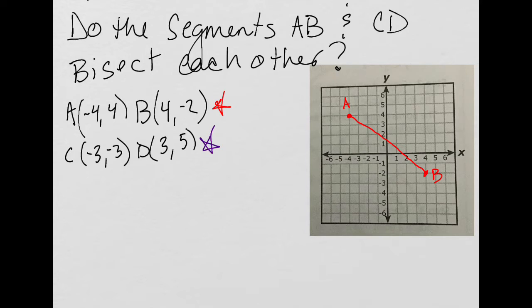And so in purple, C, D. C is at negative 3, negative 3, and D is at 3, 5. And so when I look at these pictures, they look like they kind of cut each other equally, but I want to actually double check my work.